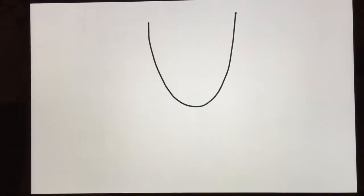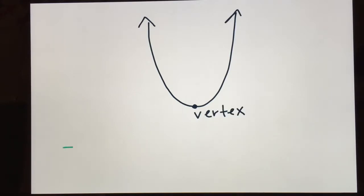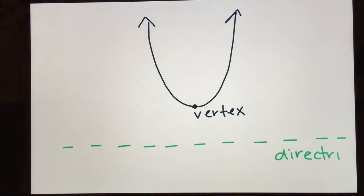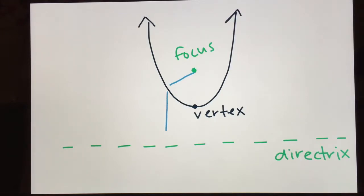In your notes, go ahead and draw a picture of a parabola — it's a U shape. In that picture, here's the vertex right here. Down underneath, draw a dotted line, and this is called the directrix. And then up here we have this point, and this point is called the focus. The definition of a parabola is: it's a bunch of points that are equally distant from a focus and a directrix.